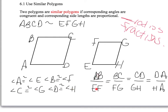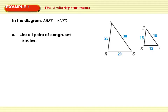The side lengths are proportional. So if I divide AB by EF, I would get a number equal to BC divided by FG, CD divided by GH, and DA divided by HE. So we have congruent angles and proportional sides.